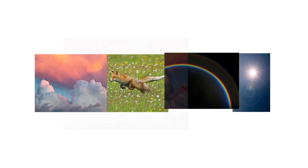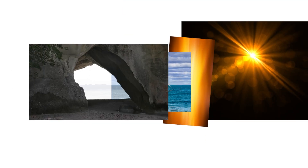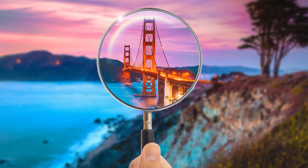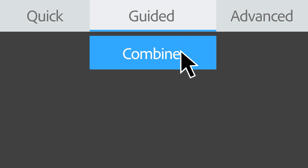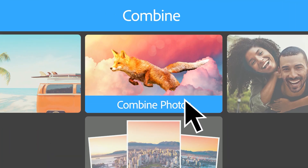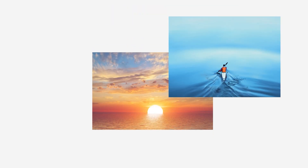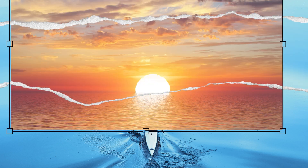Ready to mix it up? Transform multiple photos into one unique moment with Combine Photos. Just go to the Image menu and click Combine Photos, or go to the Guided menu and choose the Combine Photos Guided Edit. Select a layout size, import your photos, or choose from a library of free Adobe Stock images. Pick your background image, then combine elements from other photos using selection tools to keep or erase different parts.